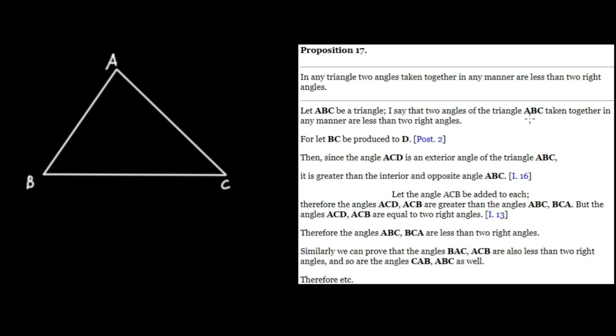I say that two angles of the triangle ABC taken together in any manner are less than two right angles. Which is what we're trying to prove.